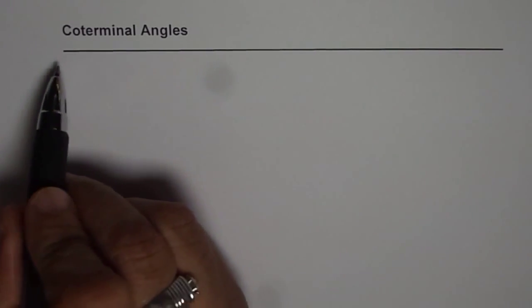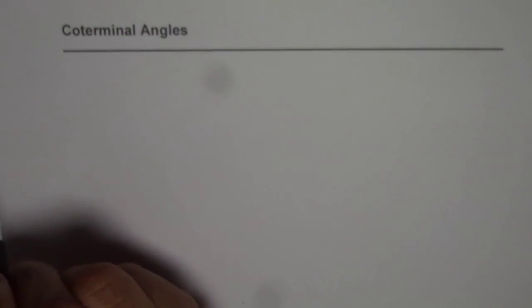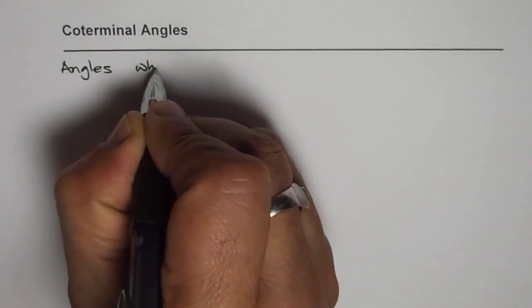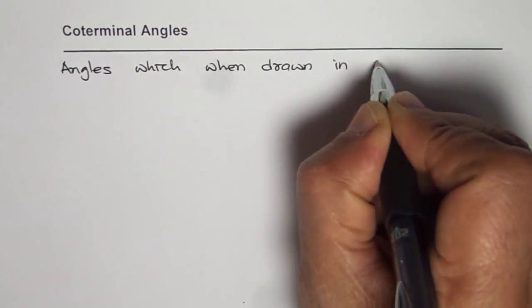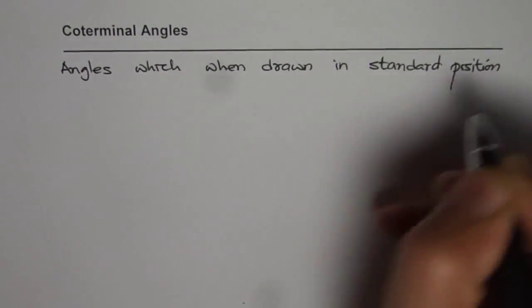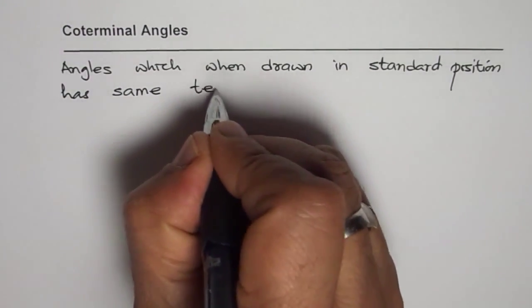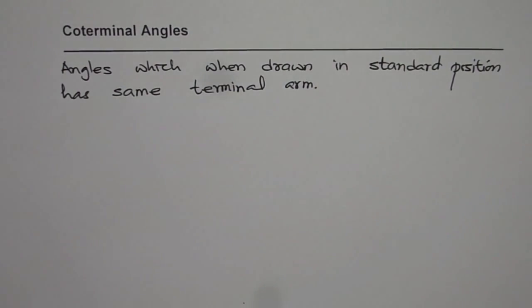I'm Anil Kumar and in this video we'll try to understand what co-terminal angles are. By definition, co-terminal angles are angles which, when drawn in standard position, have the same terminal arm. So the angles which when drawn in standard position have the same terminal arm are called co-terminal angles.